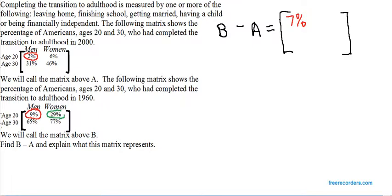Then, row 1, column 2, the entry from matrix B, the entry from matrix A, and we subtract them, giving us 23%.